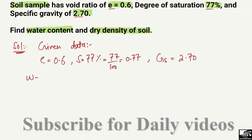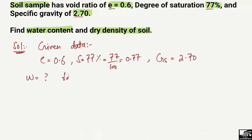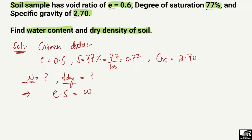We need to find water content W and the dry density of the soil sample — both are unknown. We use the formula relating the known and unknown parameters: E × S = W × Gs, where void ratio multiplied by degree of saturation equals water content multiplied by specific gravity.